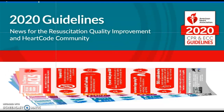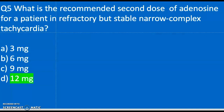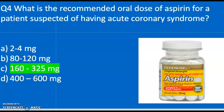Question five: What is the recommended second dose of adenosine for a patient in refractory but stable narrow complex tachycardia? A) 3 milligrams, B) 6 milligrams, C) 9 milligrams, D) 12 milligrams. The correct answer is D — 12 milligrams.